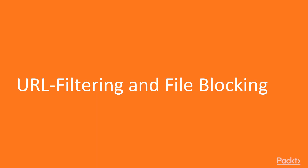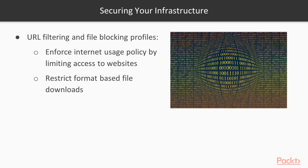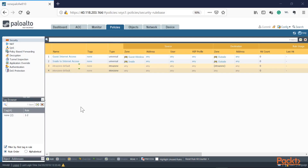In this video we're going to take a look at URL filtering and file blocking profiles on the Palo Alto firewall. We're going to configure two profiles: one is the URL filtering profile and the other is a file blocking profile, because we want to limit what users can download from the internet. In our previous video we took a look at configuring antivirus and anti-spyware profiles. Now we need to enable URL filtering and restrict access to specific websites for our internal users.